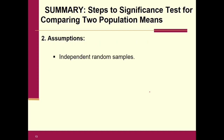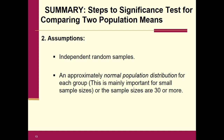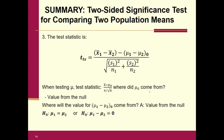The assumptions are: first, you need two independent random samples. Second, either you need the two populations to be normal — or at least approximately normal — or if not, you need the sample size to be greater than or equal to 30 for the central limit theorem to apply.